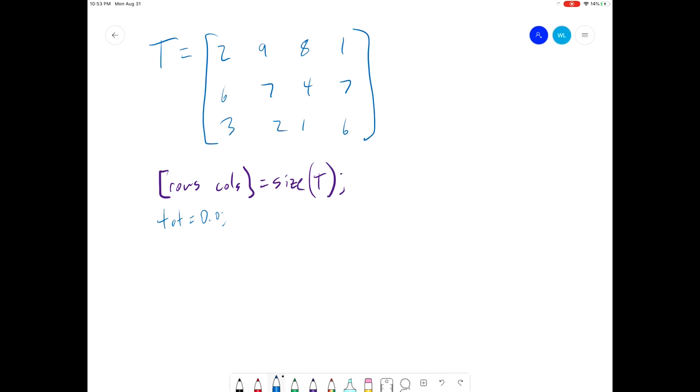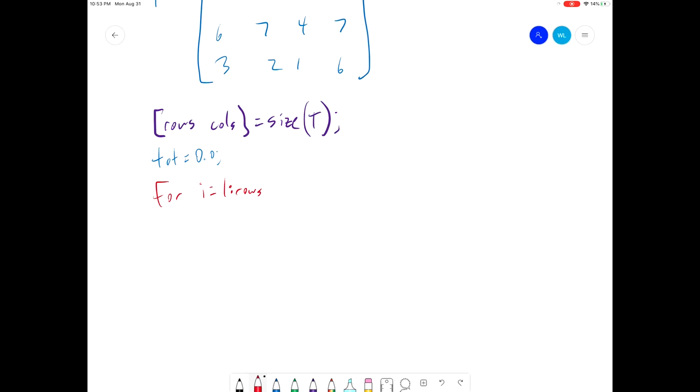So here's what we did in our sum of vector code. We got our for loop. It was for i equals 1. In this case we'll go to rows instead of n because we don't have n. And then inside of that code, inside of that for loop, we accumulated our total. So we said total equals total plus, in this case it's t, i. And that would get our sum of a vector.